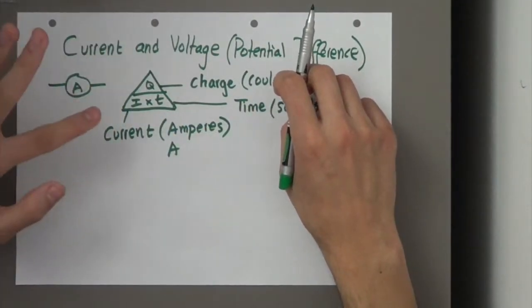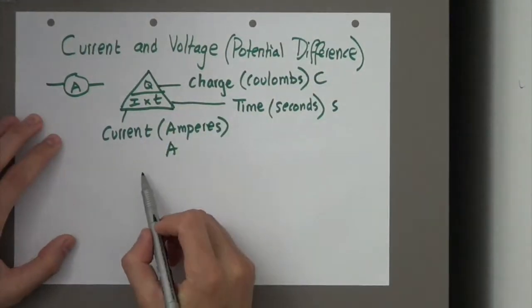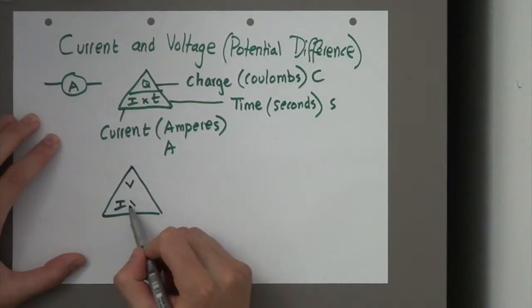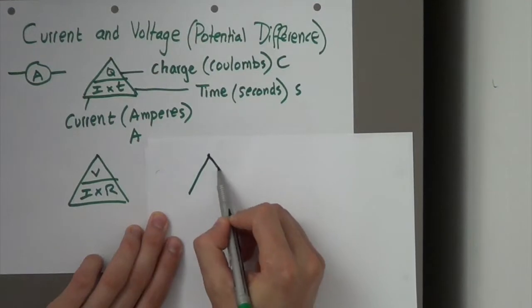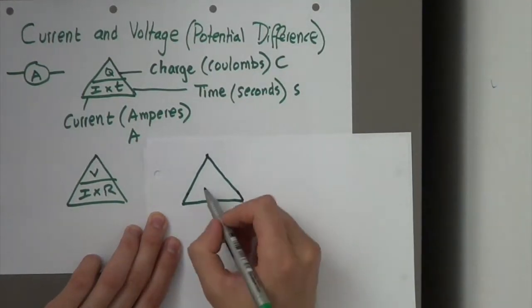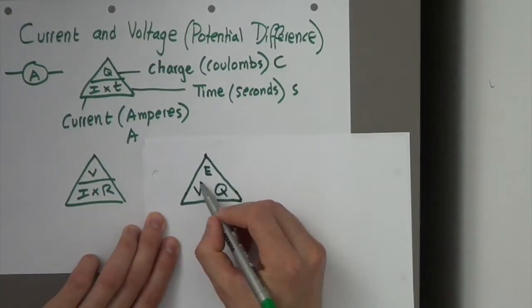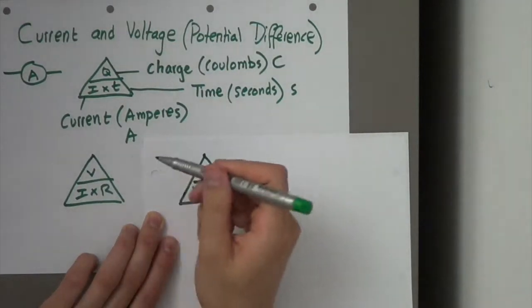So, that's this formula. So, that's current. What about voltage? With voltage, there are two formulas, V equals I times R, and the second formula is this one, which is V equals E over Q. So, let's break down what do these terms mean.